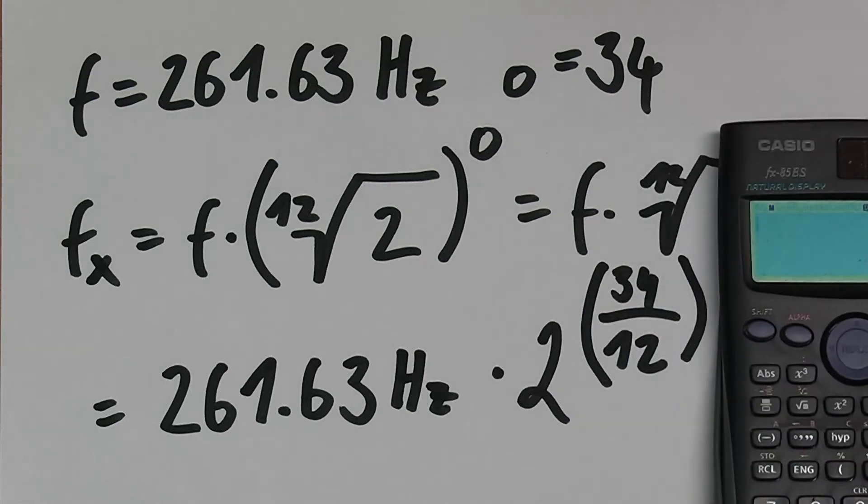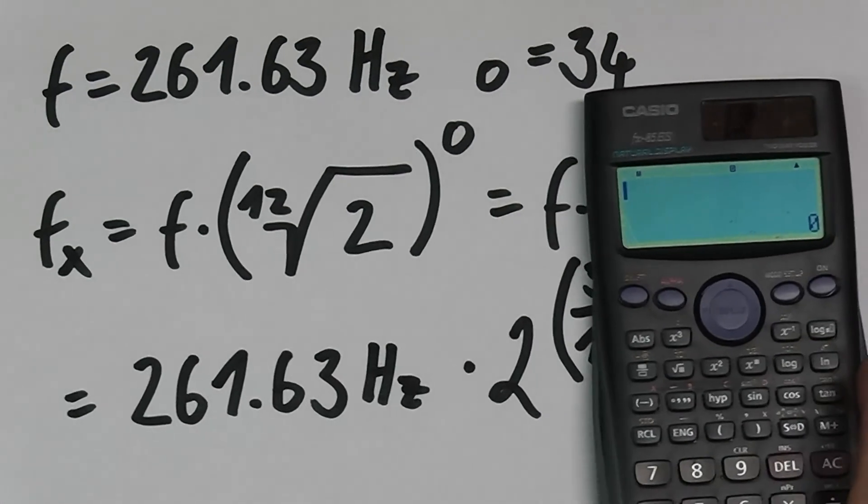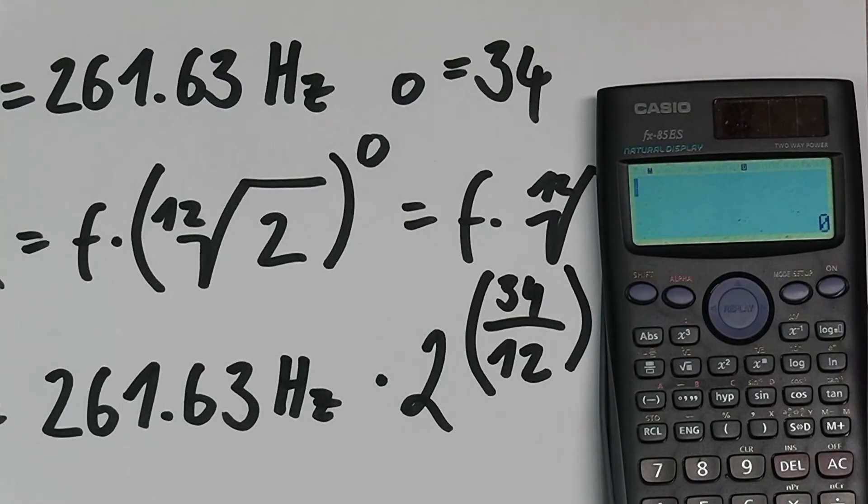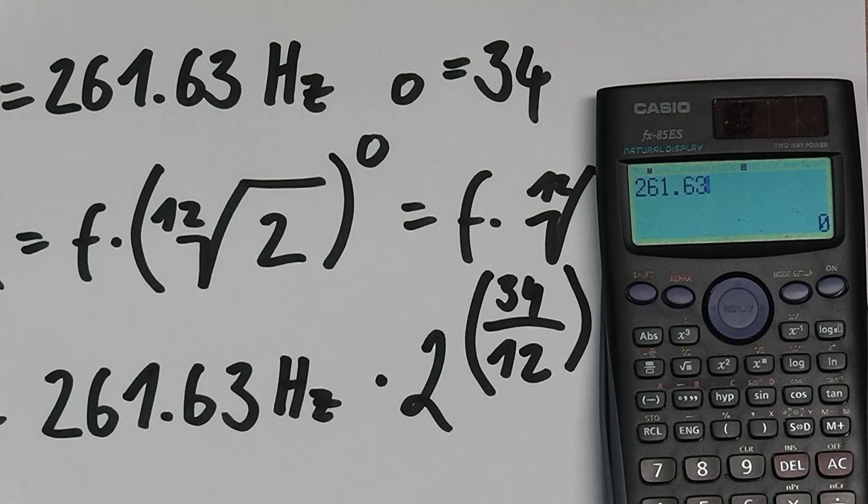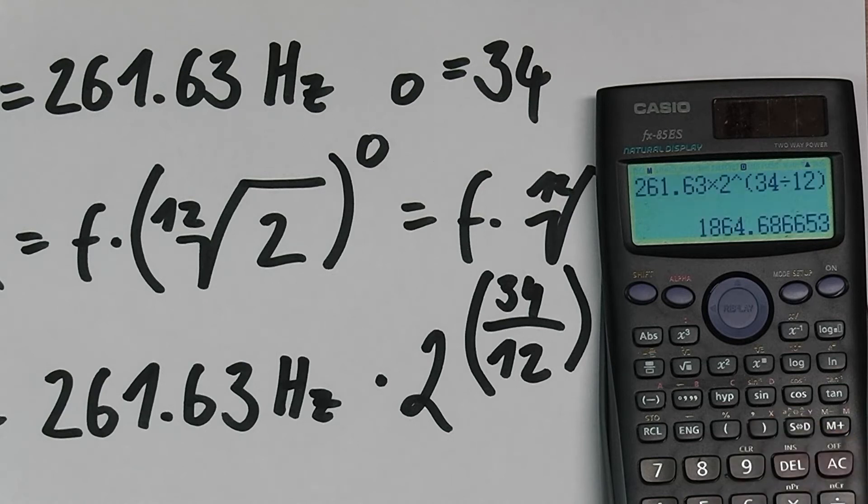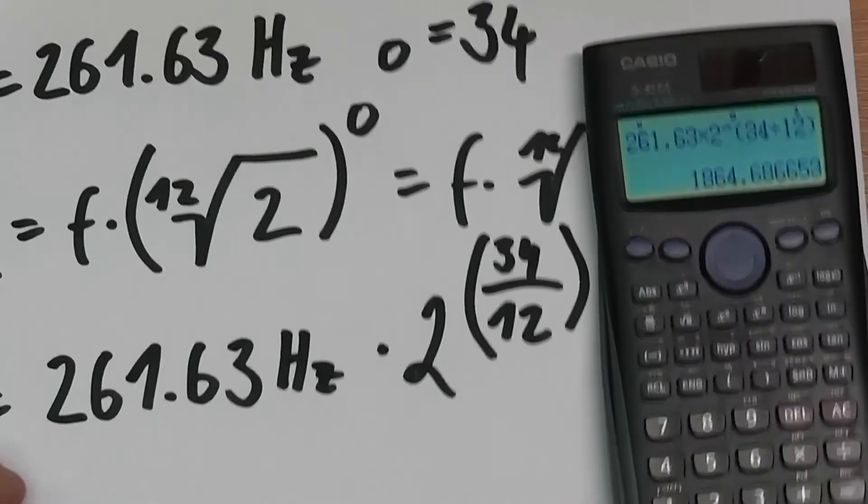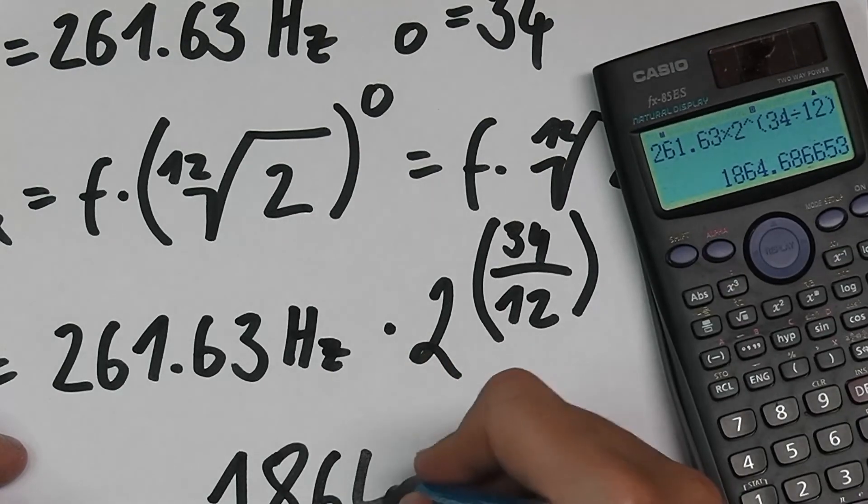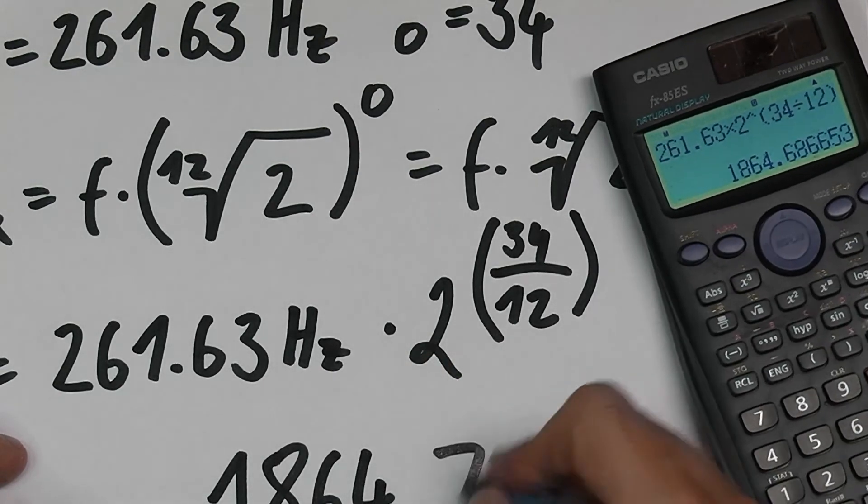If we enter that into our calculator, we enter 261.63 times 2 to the power of 34 divided by 12. This gives us the frequency of the tone: 1864.7 hertz.